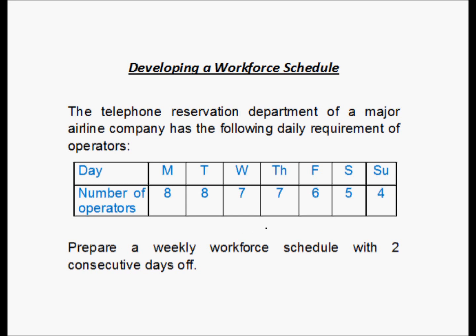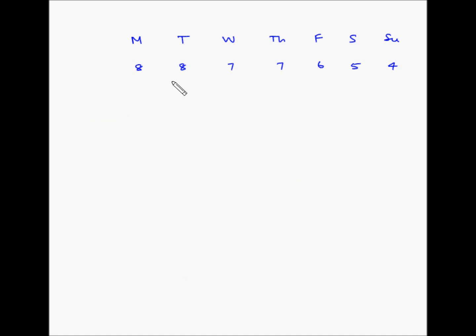Based on this requirement, we have to prepare a weekly workforce schedule with two consecutive days off for each employee. The first step is to determine the two consecutive days with the lowest net requirements. Calculating consecutive pairs: 8+8=16, 8+7=15, 7+7=14, 7+6=13, 6+5=11, 5+4=9, 4+8=12. Saturday and Sunday have the lowest net requirements with a sum of 9.